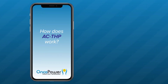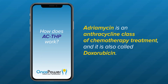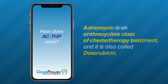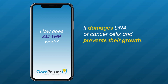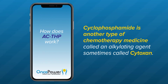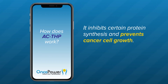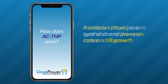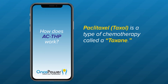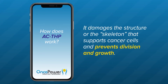How ACTHP works: Adriamycin is an anthracycline class of chemotherapy treatment, also called doxorubicin. It damages DNA of cancer cells and prevents their growth. Cyclophosphamide is another type of chemotherapy called an alkylating agent, sometimes called iscytoxin. It inhibits certain protein synthesis and prevents cancer cell growth. Paclitaxel or taxol is a type of chemotherapy called taxane. It damages the structure or skeleton that supports cancer cells and prevents division and growth.